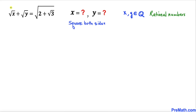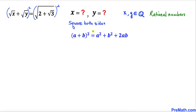Let's go ahead and take a square on both sides of this equation. Now let's recall the famous identity (a+b)² and apply it on the left-hand side. The left-hand side becomes: square root of x whole squared plus square root of y whole squared plus 2 times square root of x times square root of y, equals the right-hand side where the square and square root undo each other.